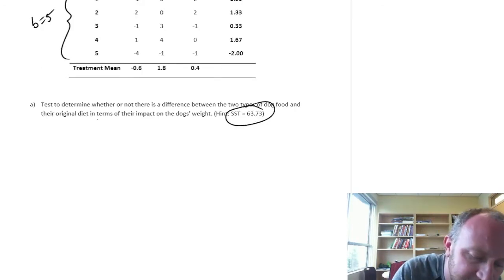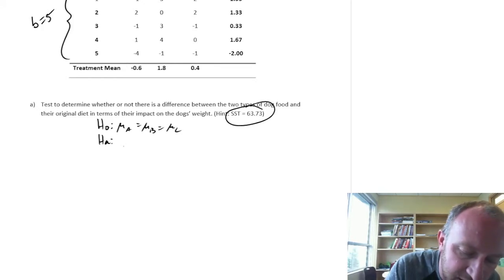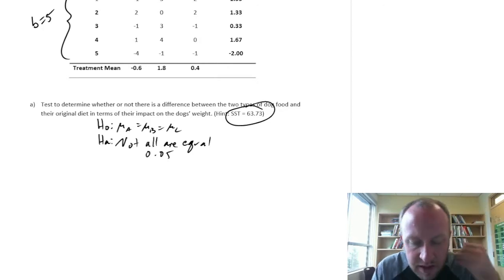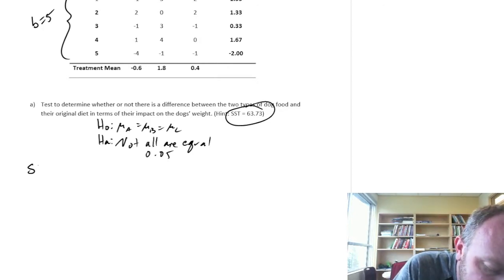So our null hypothesis. We are testing is there a difference between A, B, and C. Alternative. Not all are equal. And let's just do alpha 0.05 again.